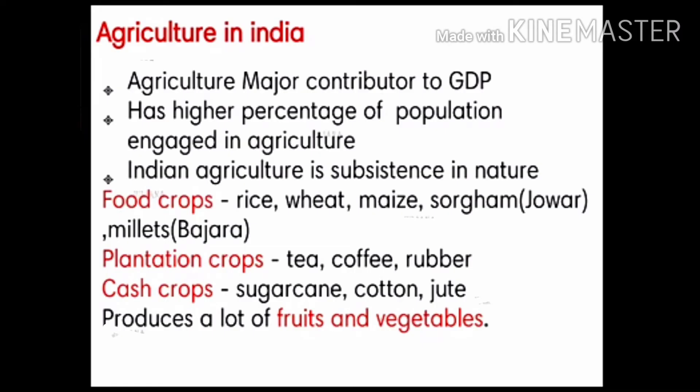Now a short note on agriculture in India. Agriculture is a major contributor to GDP and has a higher percentage of population engaged in it compared to Brazil. Indian agriculture is subsistence in nature — meaning farmers produce mainly for their own family, and whatever remains is sold in the market. Majority of the farmers are poor and depend hand-to-mouth.